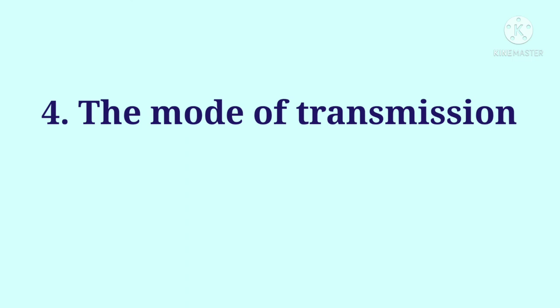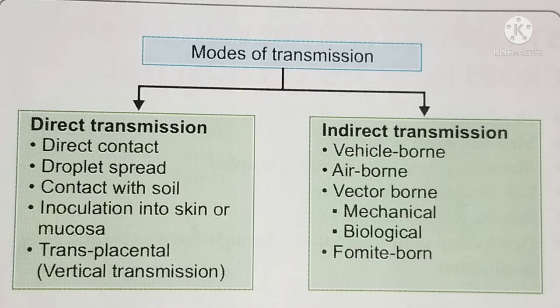The mode of transmission is how a bacteria or virus is spread. There are two types: direct transmission and indirect transmission. Direct transmission occurs from person to person by direct contact. Indirect transmission involves a vehicle — it can be spread through the air, or via fomites like handkerchiefs or pencils.